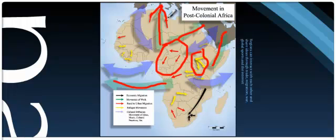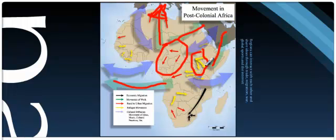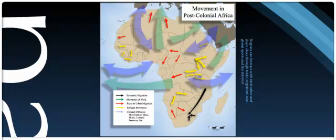When people from North Africa moved to Europe, they took their language, their culture, and their ideas with them to Europe, interacting with a different region. When these people fled southern Sudan to Ethiopia, Kenya, and Tanzania, they brought their language, their culture, and their religion with them. That's spatial diffusion — they moved and took their ideas with them.